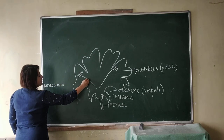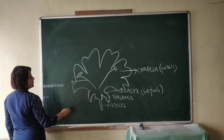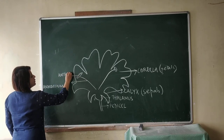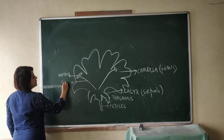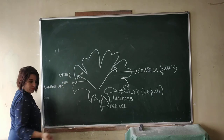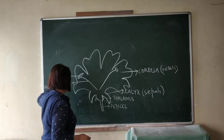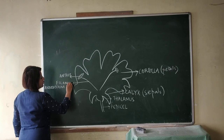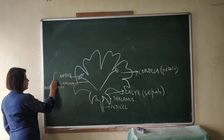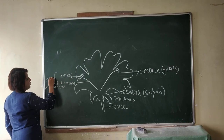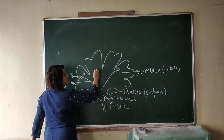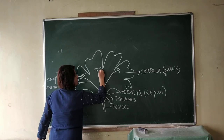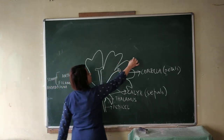It consists of stamens. And the stamen has two parts: anther and the filament. Then the last whorl consists of the female part of a flower, which is known as the gynoecium.